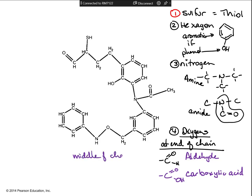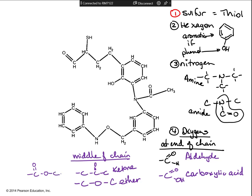If the oxygens are in the middle of the chain: if you have a carbon-carbon-carbon with just a single double bond oxygen, this is the ketone — in the middle of the chain with just a single double bond oxygen. If the oxygen is part of the chain itself, that is an ether. And if it's a combination of those two, then that is an ester.